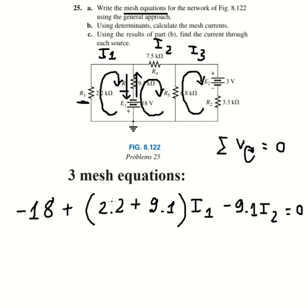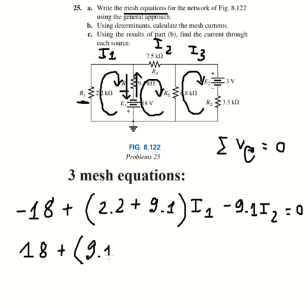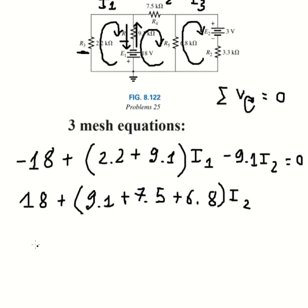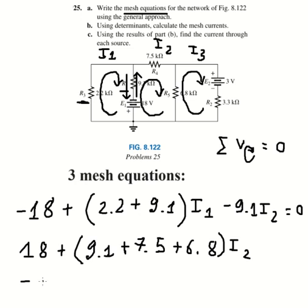Now we go to the second mesh. This circle hits the positive sign of the source, so we have positive 18 volts. We have 9.1 plus 7.5 plus 6.8. However, I number one is in the opposite direction here, so we need to subtract 9.1 times I number one.